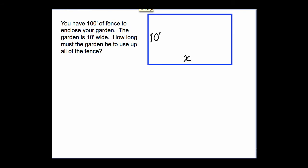In the first problem, you have 100 feet of fence to enclose your garden, and the garden is 10 feet wide. How long must the garden be to use up all of the fence? We're going to let our unknown, x, be the length of the fence, and this variable represents the quantity that we're trying to find.